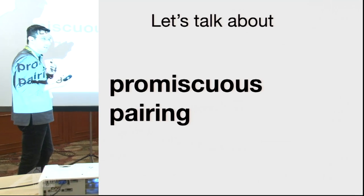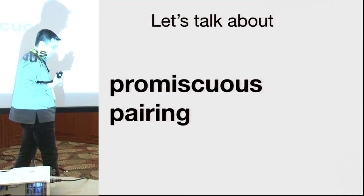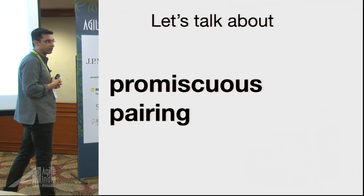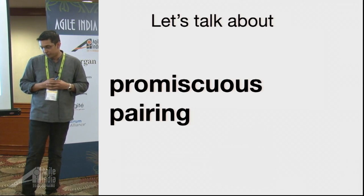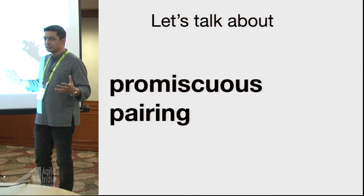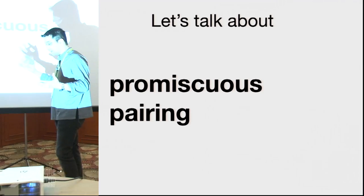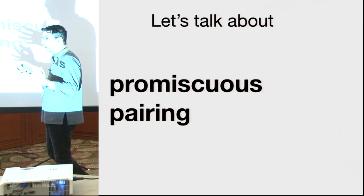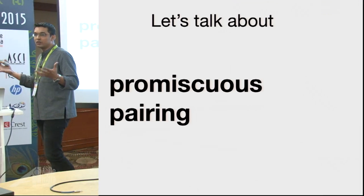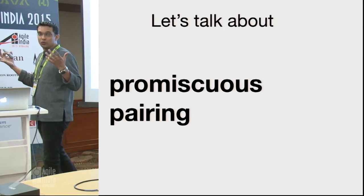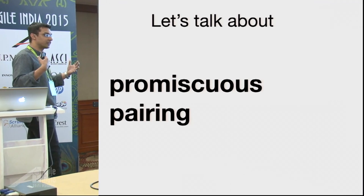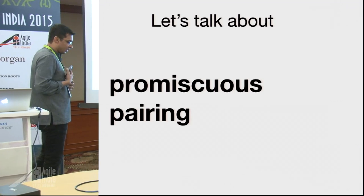It's not that we were not agile before. We have been agile for a pretty decent time - over one and a half years. This background is necessary to understand when we get into the details about how promiscuous pairing effectively works and why you need to have that well-gelled team where you can actually trust and comfortably pair with them.